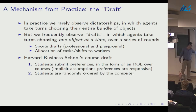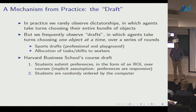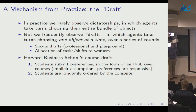Students are randomly ordered by computer. In the mechanism I'll develop, agents can express arbitrary ordinal preferences over bundles — including complementarities and substitutabilities — whereas in the Harvard draft you cannot. To study the draft we need to take seriously that preferences are responsive, at least at Harvard, to make sense of their use of this mechanism.